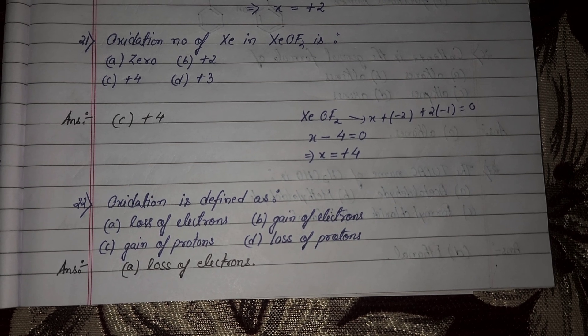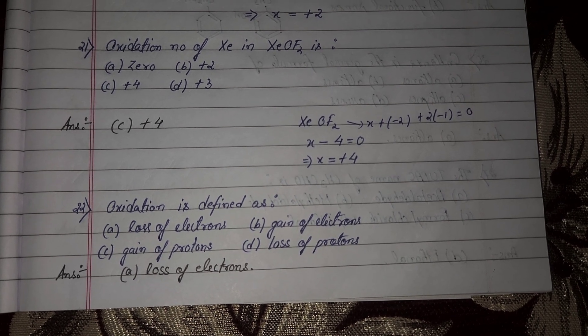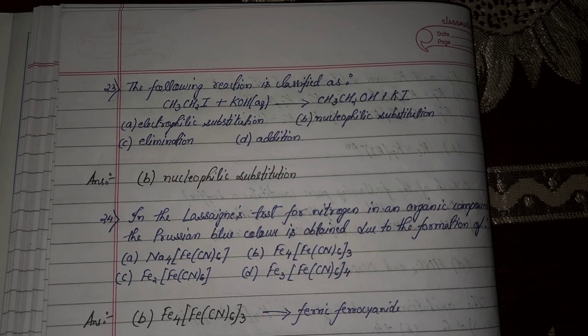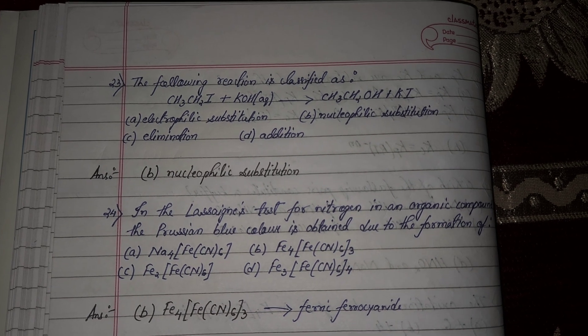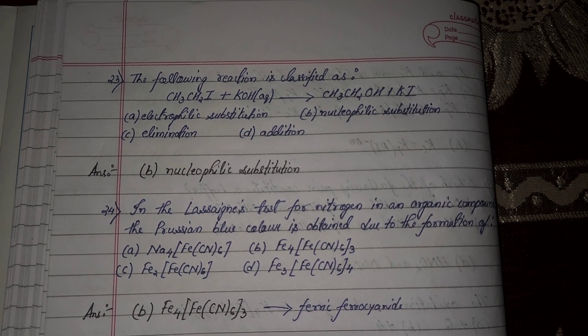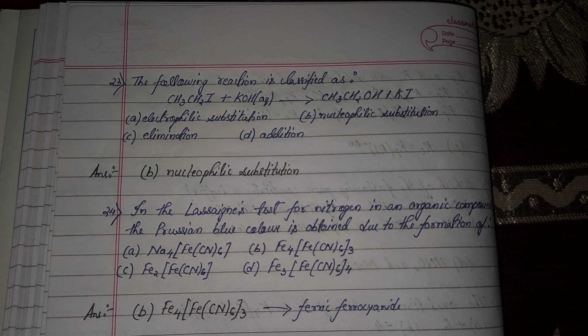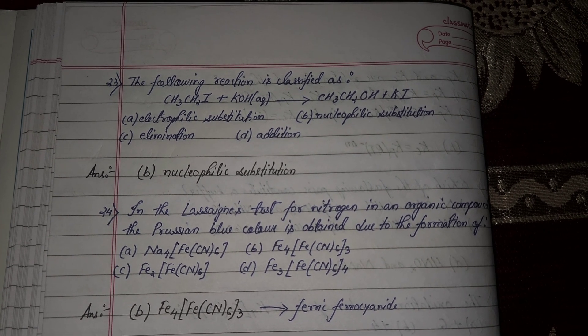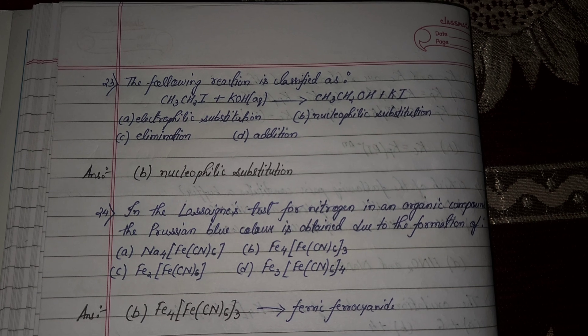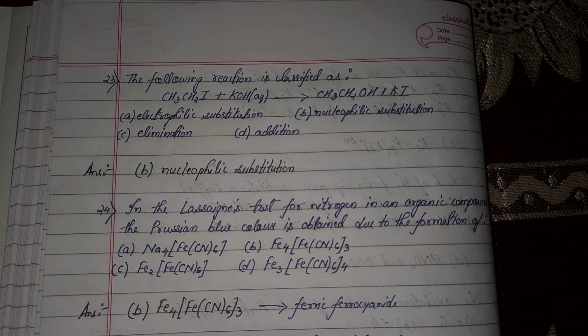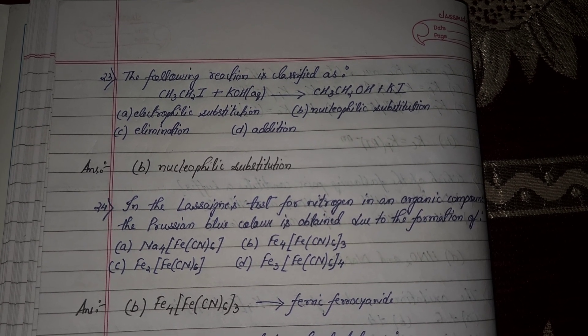Next question number 22, oxidation is defined as option number A, loss of electrons. Next question number 23, the following reaction is classified as CH3CH2I plus KOH aqueous tends to CH3CH2OH plus KI, this is nucleophilic substitution. Option number B will be correct answer.